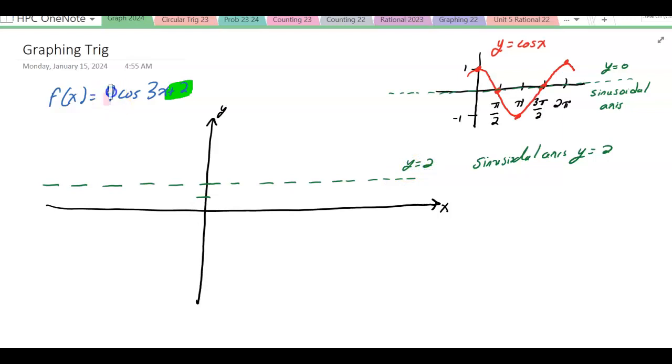The second thing we know is the amplitude is 4. So that means I'm going to go 4 above the sinusoidal axis and 4 below. So 2, 3, 4, 5, 6. I'll be up at 6, and down 1, 2, 3, 4. The minimums will occur at negative 2, and the maximums will occur at 6.